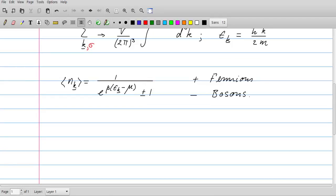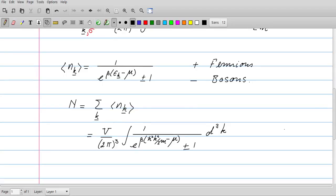This enables us to calculate the total number of particles in the system. That is called N, and it's just the sum over k of this nk. Replacing now the sum over k by the integral with v over 2π cubed as usual, and then putting in the explicit expression for the expectation value nk.